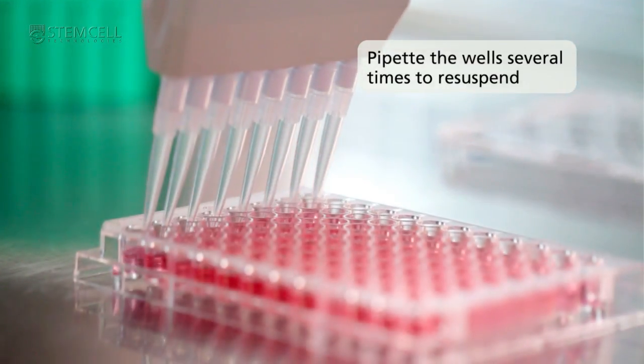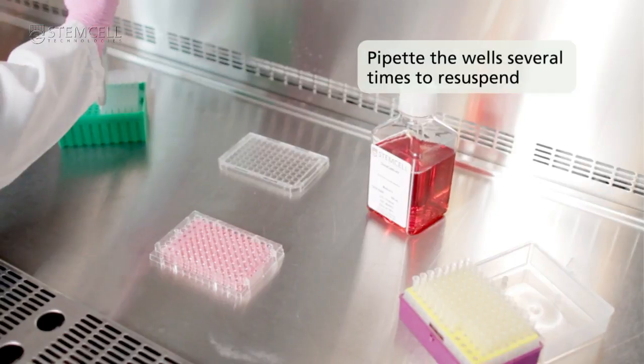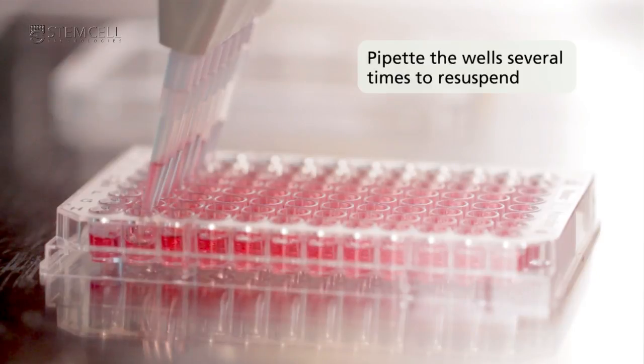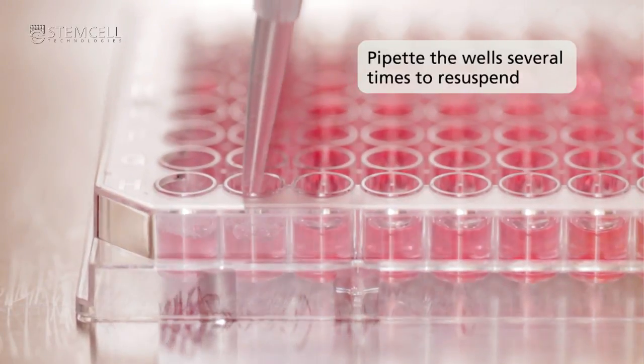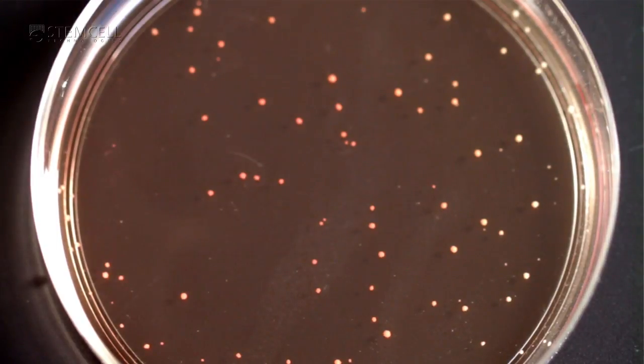Pipette the contents of the wells several times to resuspend the colonies. A single cell suspension is not required, but gently dispersing the colony will promote cell proliferation. Colonies of different sizes should be selected. Slower growing clones are often very good at producing antibodies. Grow cells for approximately 4 days and screen for specific antibodies using appropriate screening assays.